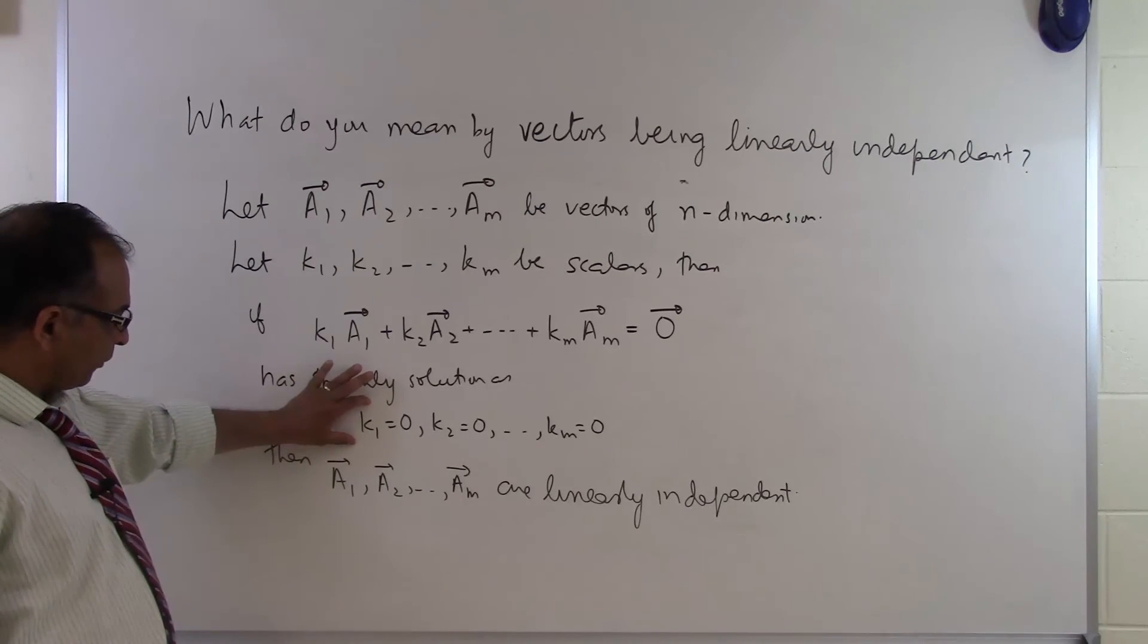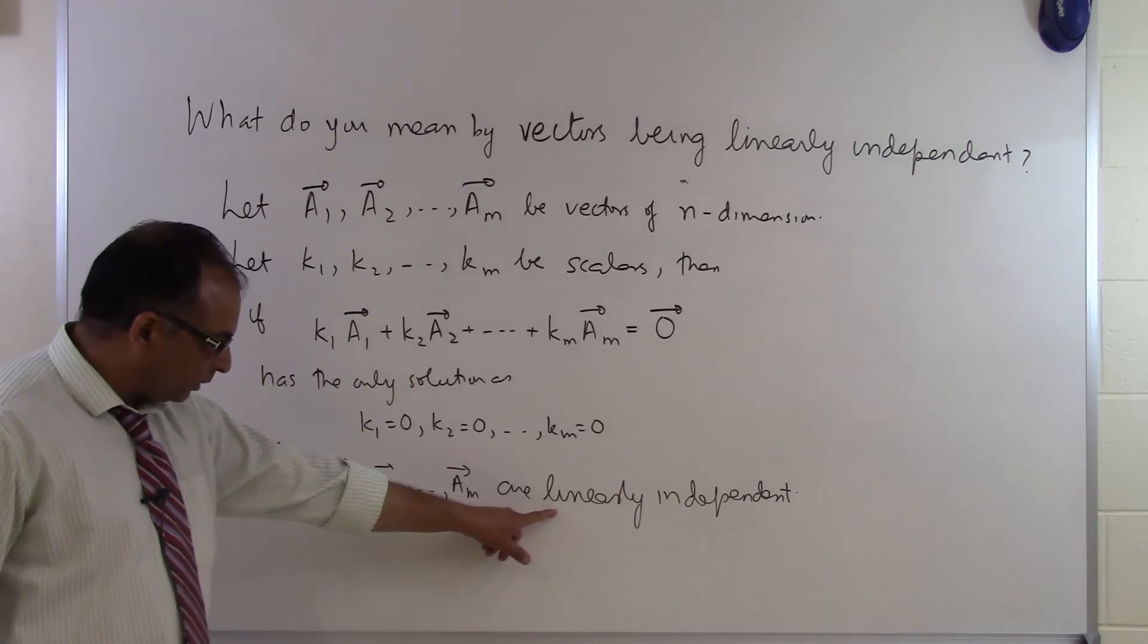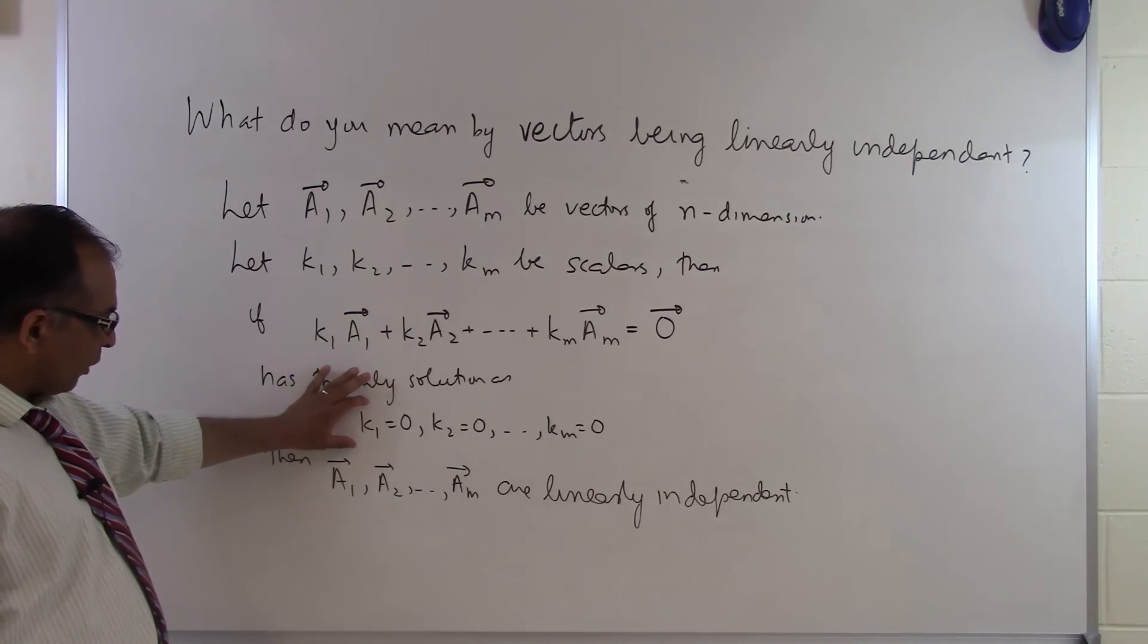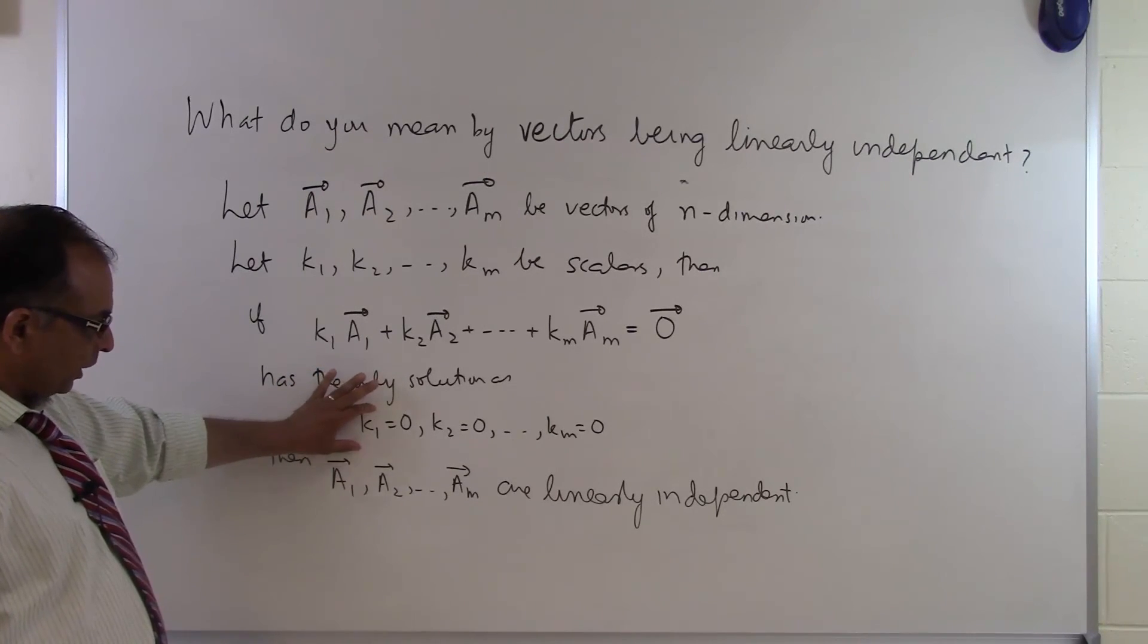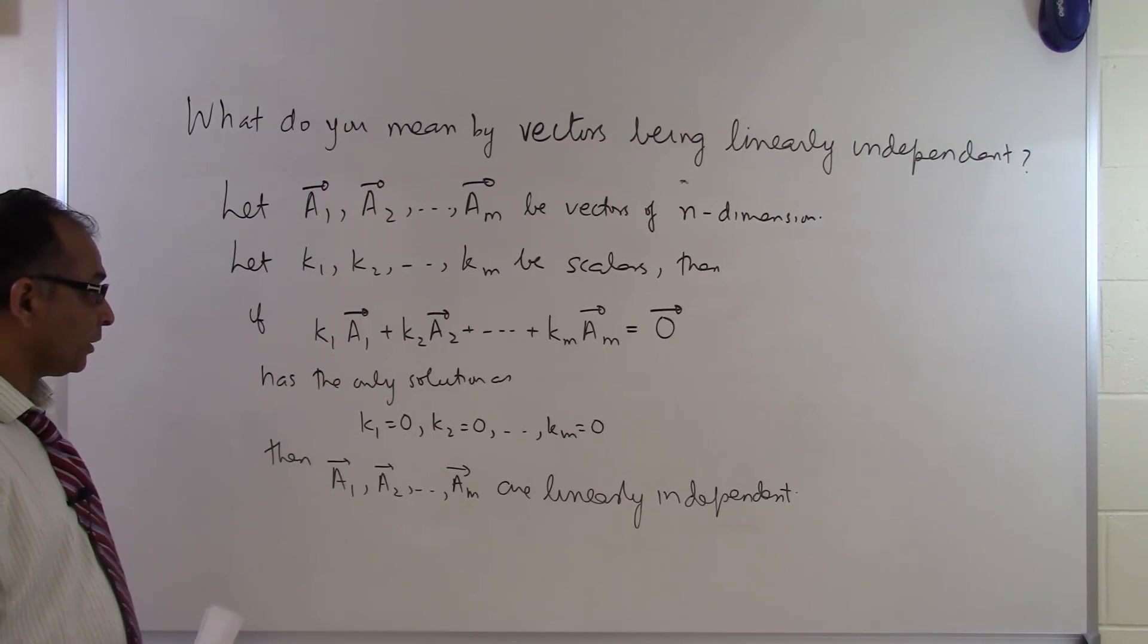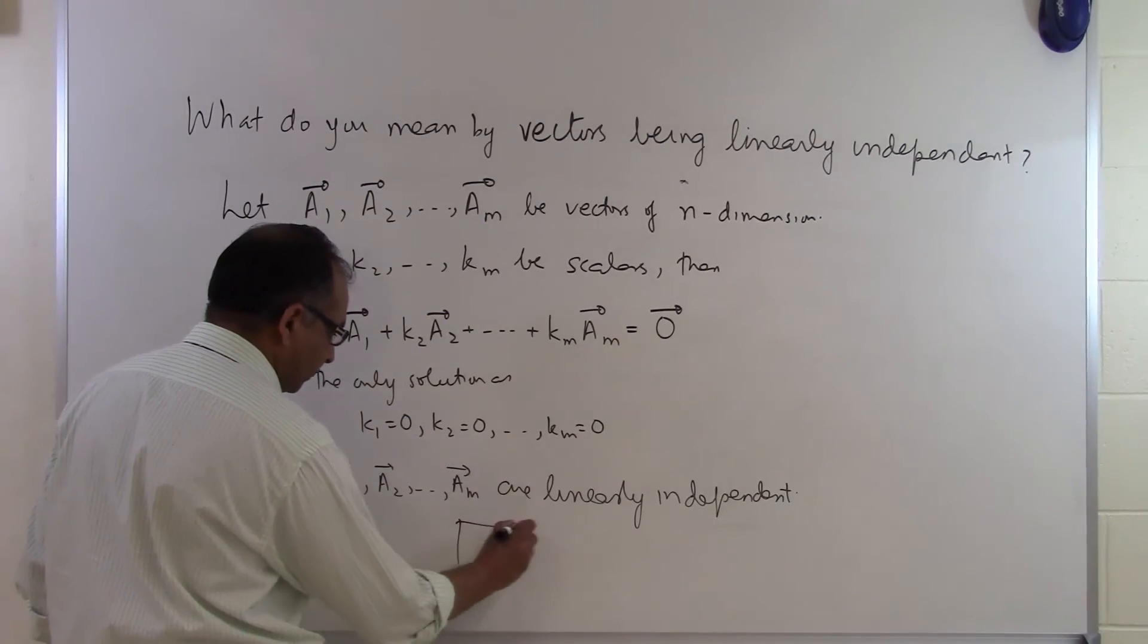So if the only solution is the trivial solution, then it is linearly independent. If you have more than one solution other than the trivial solution, then it is considered to be linearly dependent. And that's the end of this segment.